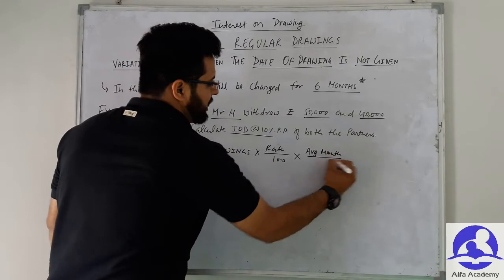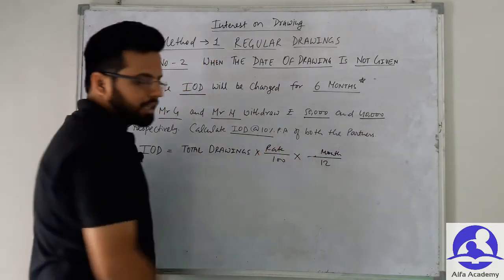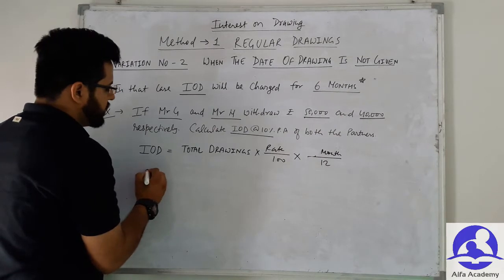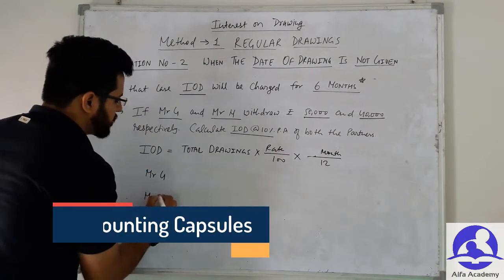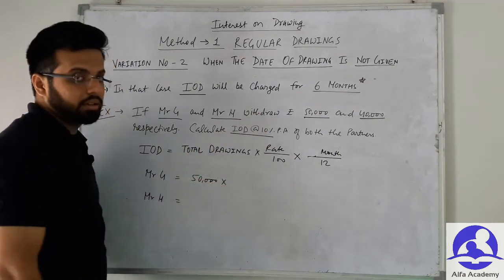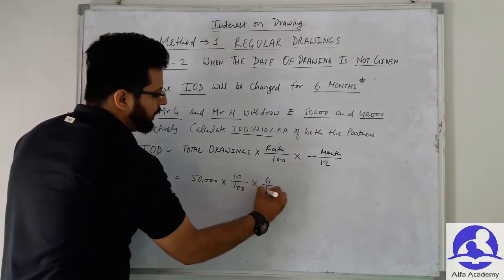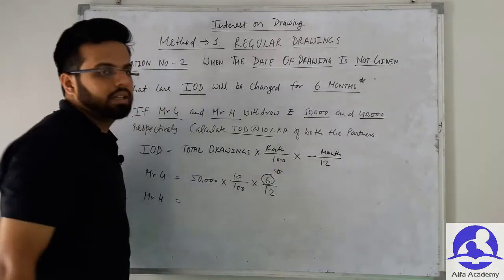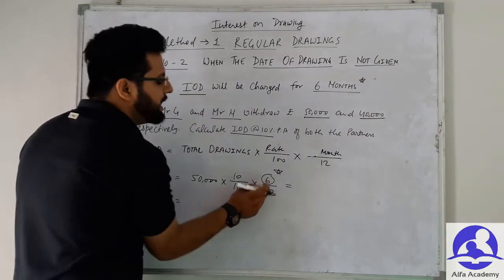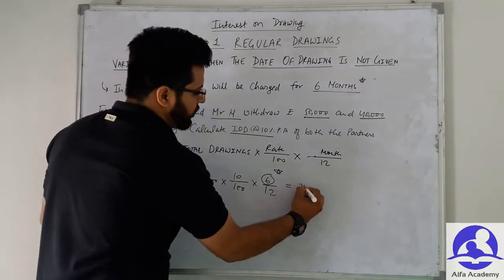Since equal amounts are not withdrawn at equal time intervals, we only use Month/12 — how many months were the funds withdrawn for. Mr. G's total drawings are 50,000 rupees. No multiplication is needed since total drawings are given. So: 50,000 × 10/100 × 6/12. The average month here is 6, because when date of drawing is not given, 6 months is used. So 50,000 × 10% = 5,000; for 6 months = 2,500 rupees.